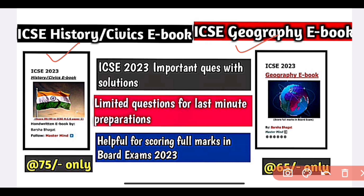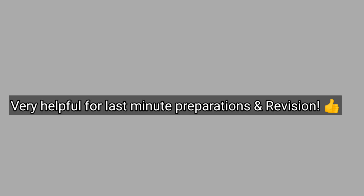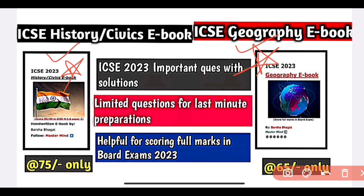Since it is now the end time, you don't have time to go through all questions from every book. If you follow this e-book, all the important questions and their solutions are included, so you don't have to search elsewhere. The price of the History Civics e-book is 75 and the price for Geography is 65.